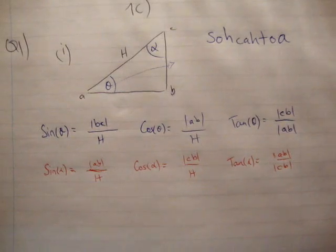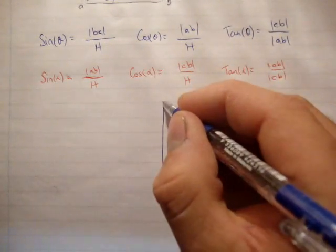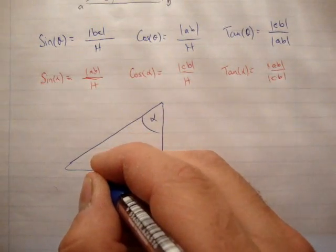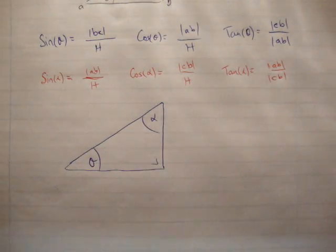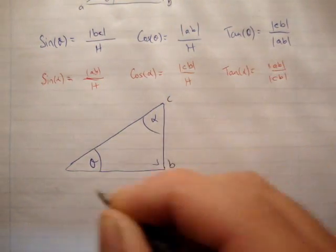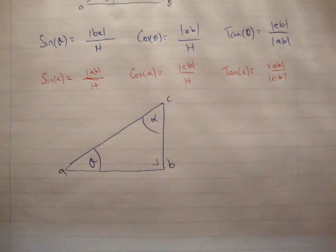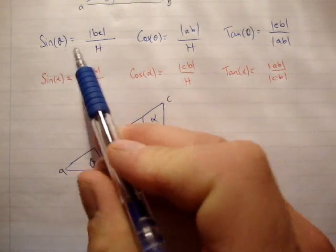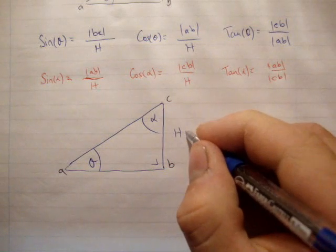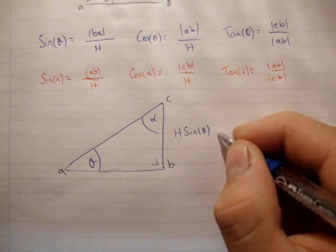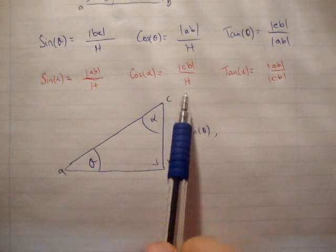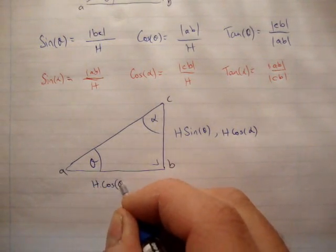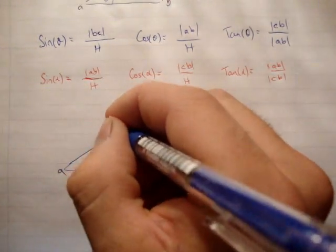You could redraw your triangle as follows. These are lengths, magnitudes. BC here is H times sine of theta, because that's just a bit of algebra. BC equals H sine theta and equals H cos alpha. This one here is H cos theta and H sine alpha. And this is H.